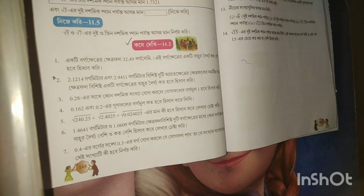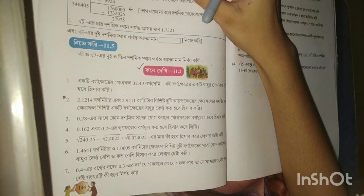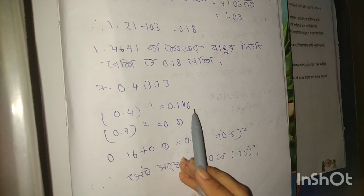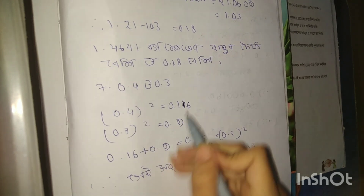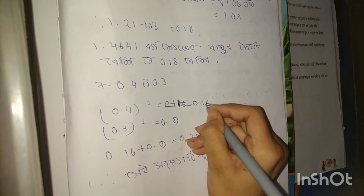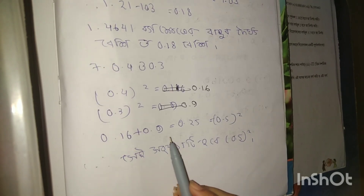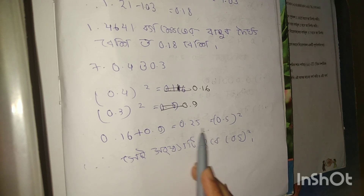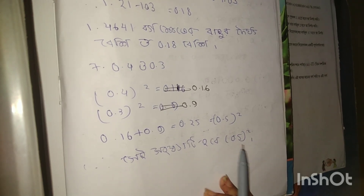bm is 1.4641. 1.3 plus 0.9 equals 0.25, so we have to plus. 0.25 equals 0.25 squared, so 0.5 squared is equal to 0.5 squared.